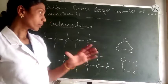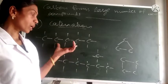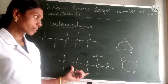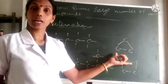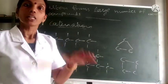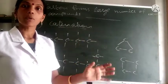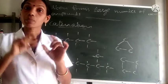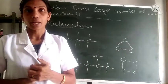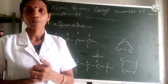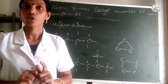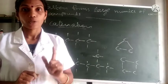So there are three different types of carbon compounds: straight chain compounds, branched chain compounds, and cyclic compounds. In all these compounds, carbon atoms are linked with other carbon atoms, and that property of carbon is known as catenation.